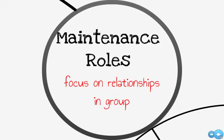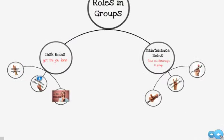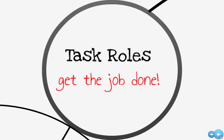Based on what you already know about personality styles, can you guess which types of personalities are drawn to task roles in a group communication setting? What about maintenance roles? If you guess the analyticals and drivers are probably drawn to task roles within a group, you're probably right. And if you think amiables and expressives tend to focus more on relationships within the group, you're probably right there too. Within these task and maintenance roles, there are very specific niches often filled by group members. Task roles are filled by those who want to get the job done.